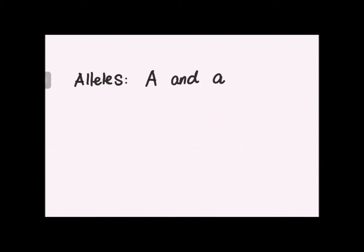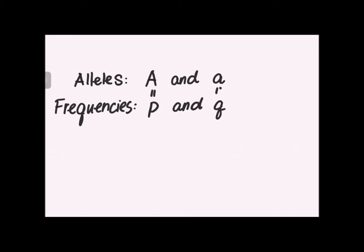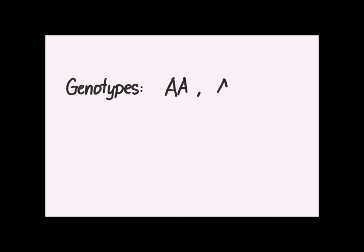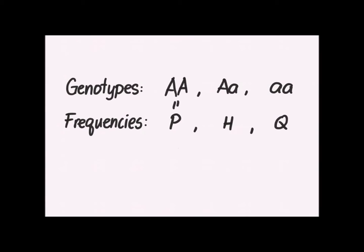The mathematical demonstration of the Hardy-Weinberg Principle is as follows. Given two alleles occupying a locus — uppercase A and lowercase a — their frequencies are symbolized by lowercase p and lowercase q, respectively. As frequencies, p and q must equal 1. From these two alleles, three genotypes can be formed: homozygous dominant, heterozygous, and homozygous recessive. The frequencies for these three genotypes are symbolized by uppercase P, H, and Q respectively, and as frequencies P, H, and Q must also sum to 1.